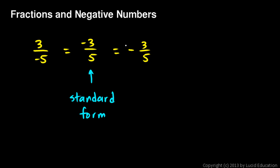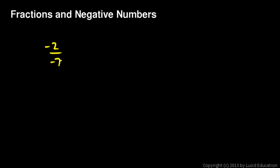Now sometimes you end up with a negative sign in the numerator and the denominator. Like look at this: negative 2 over negative 7. If you have something like this, remember that the fraction bar means division, so this is negative 2 divided by negative 7. And a negative number divided by another negative number is a positive number, so this is equivalent to 2 over 7.